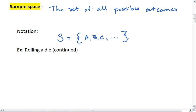So for our rolling of a die example, we know that the possible outcomes are we could roll a 1, a 2, a 3, a 4, a 5, or a 6.